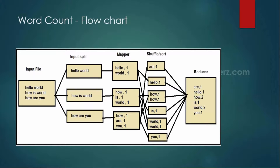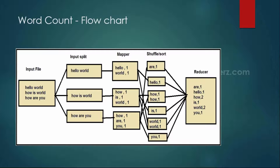Looking at the flowchart as discussed in the last module — whatever input file we have, as a first step it is divided into input splits. An input split is a logical reference to your actual block. By default, it reads line by line, and we have something called a text input format. In advanced MapReduce we will discuss text input format and key-value input formats — there are different types of input formats available.